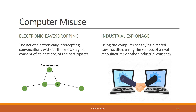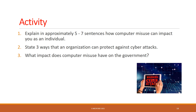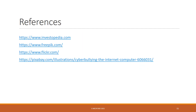What we need to bear in mind with these acts of computer misuse is who are the entities impacted. How does each form of computer misuse affect the individual, the organization, and the government? A short activity: explain in approximately five to seven sentences how computer misuse can impact you as an individual. State three ways that an organization can protect against cyber attacks. And what impact does computer misuse have on the government? Good luck.